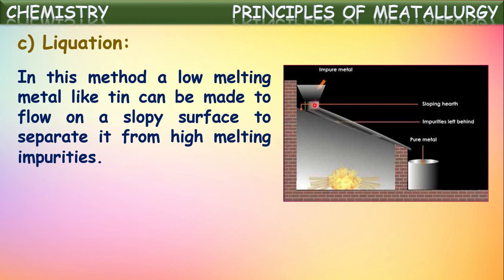When the mixture is poured on the inclined surface and heated, tin immediately comes into liquid state at lower temperatures, whereas the remaining impurities stay in the solid state. The molten tin flows down the inclined surface and is collected in the container as pure molten metal, while impurities remain in the solid state on the inclined surface. This is liquation.